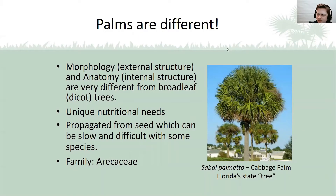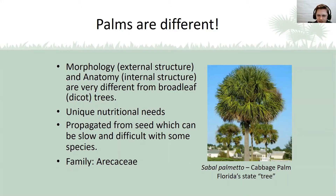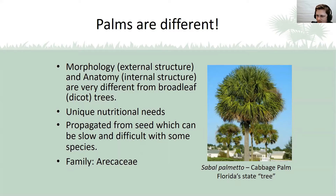Palms belong to the division of flowering plants commonly referred to as monocotyledons, or monocots. Some other examples of monocots are grasses, orchids, and onions — things that tend to grow a vascular system that's very linear. One of the big things you'll notice with these plants is that when they initially germinate, they have a single cotyledon, or seed leaf, that emerges — that's the 'mono' part. Dicotyledons, or dicots, are another division of flowering plants, and they have two seed leaves, the 'di.'